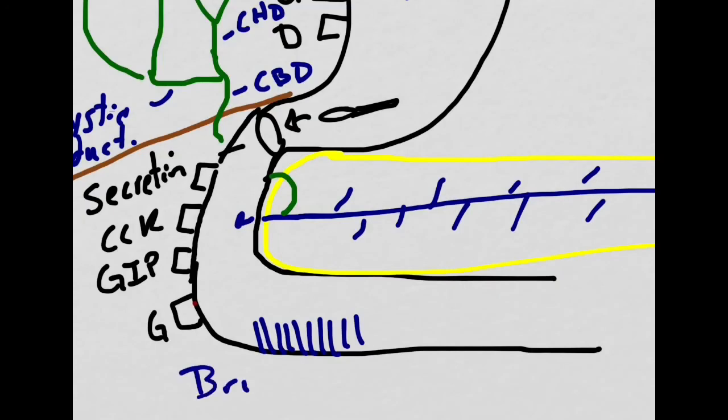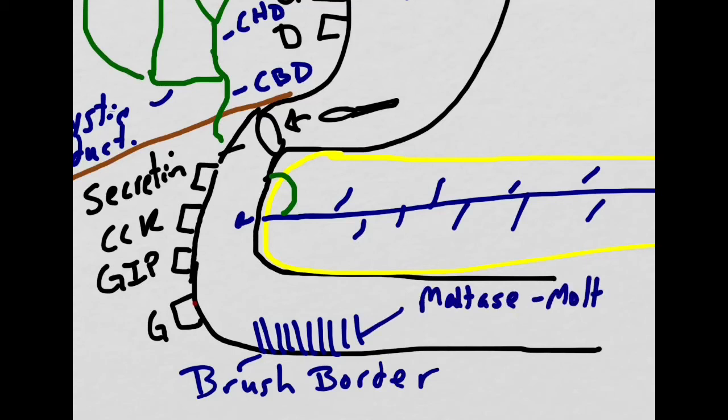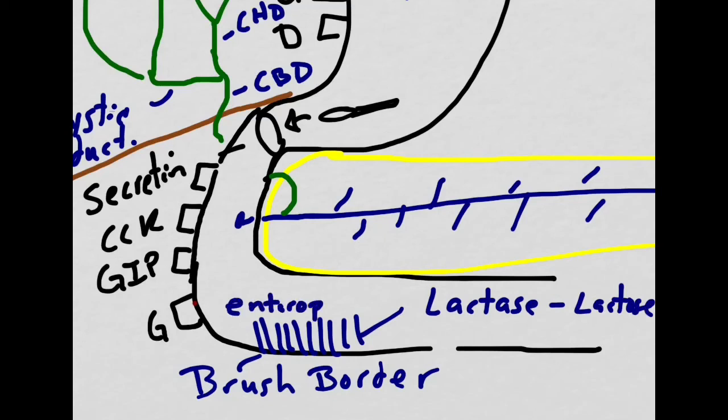In the duodenum, we have a lot of villi and microvilli structures that create a brush border. Some of the enzymes released from the brush border will break down carbohydrates. For example, maltase will break down maltose, sucrase will break down sucrose, and then lactase will break down lactose. Lactose is the sugar that you'll find in milk or dairy products. Another enzyme released from the brush border is enteropeptidase. We will discuss its function soon.